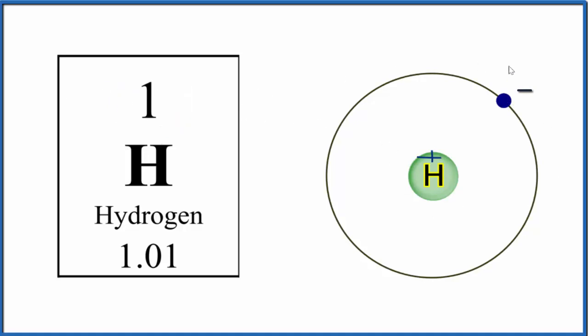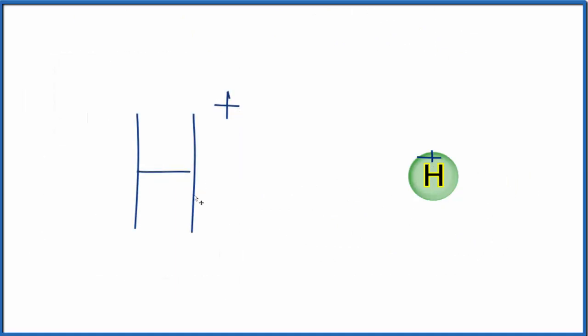When hydrogen forms ions, it loses an electron. Now we don't have any electrons around the nucleus, just the proton there, that positively charged particle. We can write the symbol for the hydrogen ion as H+. It's just a proton.